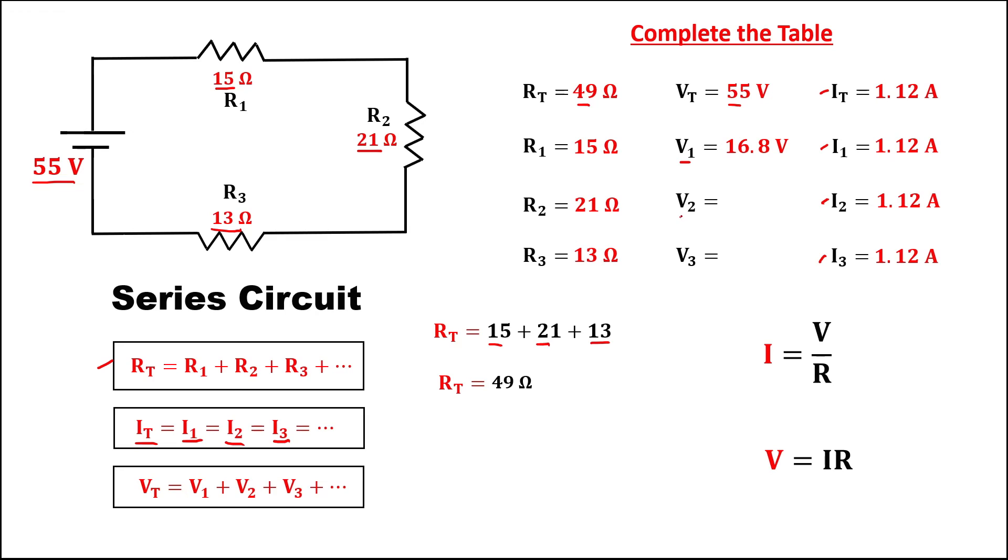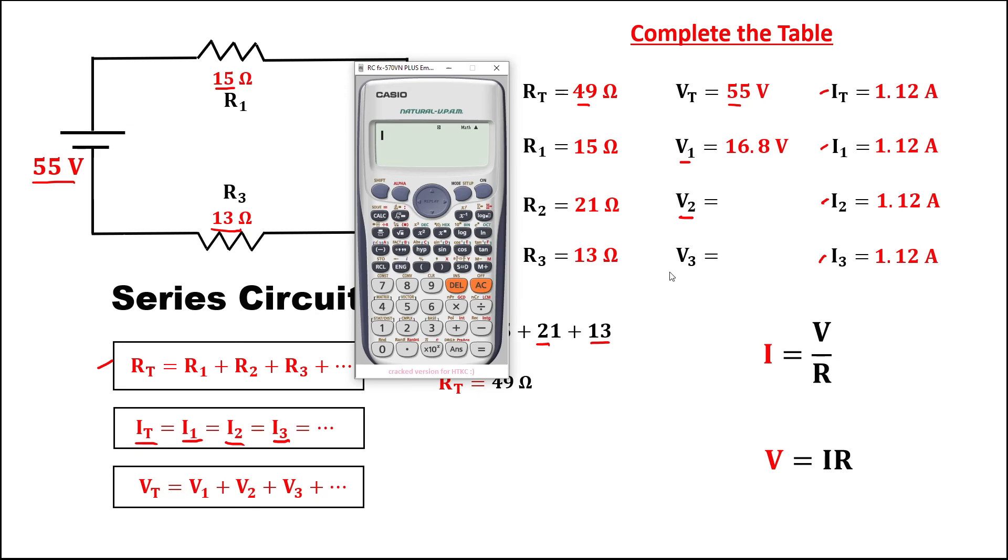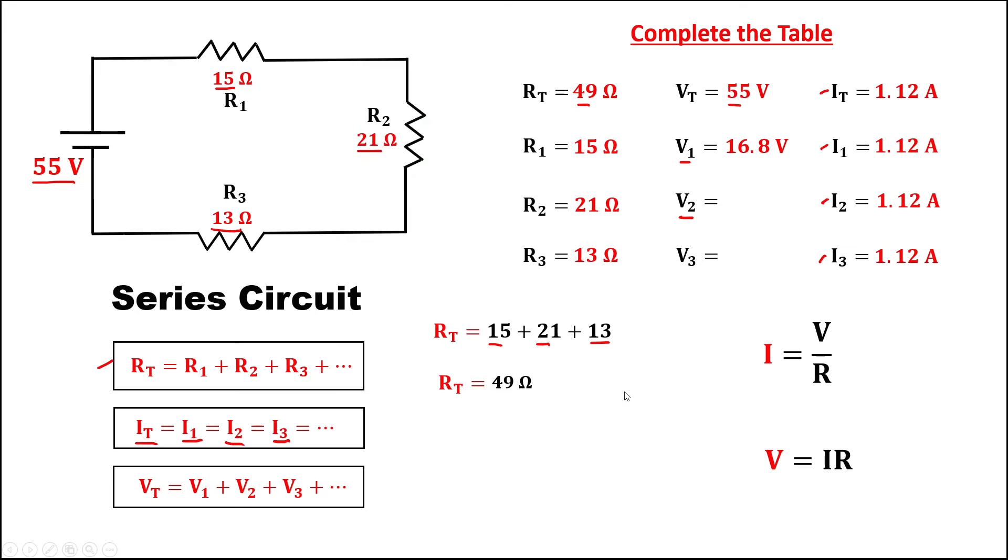Then for voltage 2, 1.12 then times this 21 ohms, so the voltage is 23.52 volts.